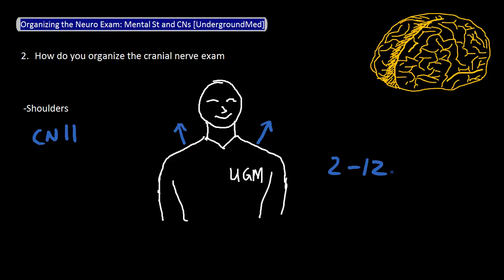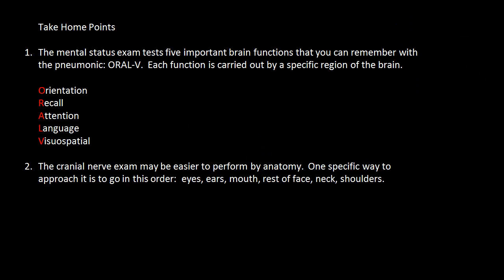Remember that cranial nerve one is smell, which is usually not tested, but may be useful for certain patients. So in this video, we've gone over ways to organize and structure the mental status and cranial nerve exams. The take-home points: the mental status exam tests five important brain functions that you can remember with the mnemonic ORAL V, each function is carried out by a specific region of the brain, and the cranial nerve exam may be easier to perform by anatomy — going in the order of eyes, ears, mouth, rest of the face, neck, and shoulders.